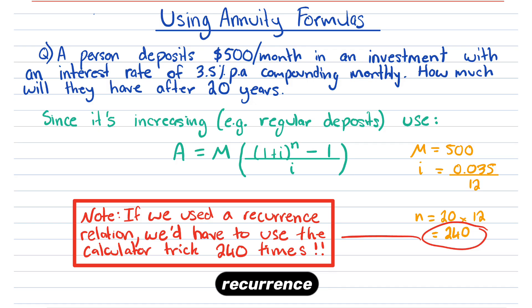Note, if we wanted to use a recurrence relation to solve this problem, we could, but we'd have to hit the equals button on the calculator 240 times. That's going to take a long time, so it's easier to use the annuity formula for long-term situations.